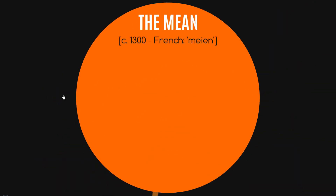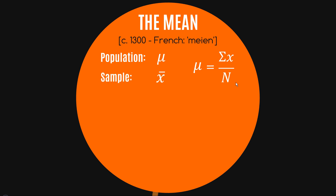The word 'mean' comes from the French 'mail' from around the 1300s, and originally was meant to mean the middle of two musical notes. When we're finding the mean from a population, we give it the Greek symbol mu. To calculate the mean, we do the sum of all the observations — this Greek letter sigma indicates we sum all the x values — so it's the sum of x over the total number of observations, N.